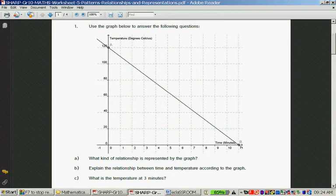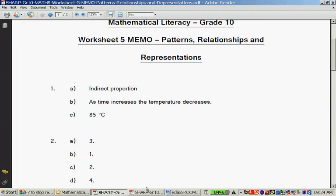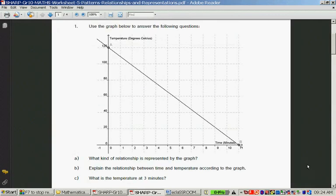Explain the relationship between time and temperature according to the graph. As time increases, the temperature decreases. What was the temperature at three minutes? So here, it's one minute, two minutes, three minutes. If you go up to the graph, it's around about there. There in the middle will be 90 degrees. So this should be around about 85, 86 degrees Celsius, and it says 85 degrees Celsius.